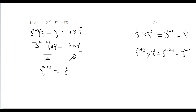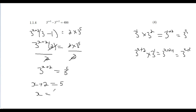Now we have 3^(x+2) = 3⁵. Since both sides have the same base, we can equate the exponents: x + 2 = 5. Subtract 2 from both sides: x = 3. Well done — that's four marks!